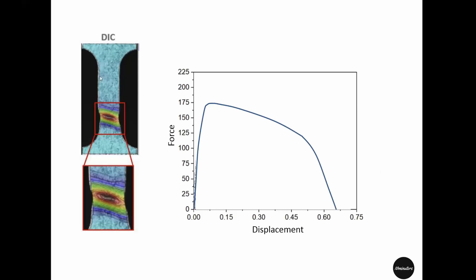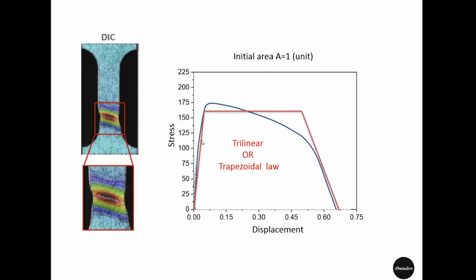To start with, let's say this specimen is pulled until failure and this is the force-displacement response. If we convert this into a stress response, we will have this curve of stress versus displacement. This is roughly the cohesive law that can explain the fracture in this area, especially if we consider that the linear elastic part before the softening is insignificant. Now we take an attempt to describe this failure using a trapezoidal cohesive law, which should look something like that.